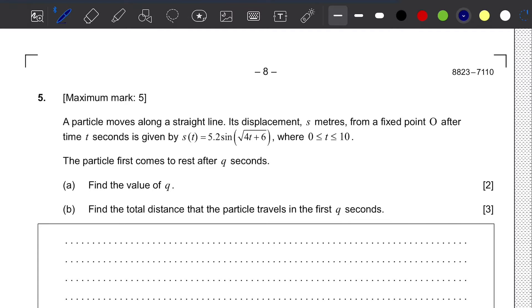Question number 5. This question is from topic 5 of your curriculum, specifically the kinematics section. We have a particle that moves along a straight line. Its displacement s meters from a fixed point after time t seconds is given by this equation, where t value is between 0 and 10. The particle first comes to rest after q seconds.